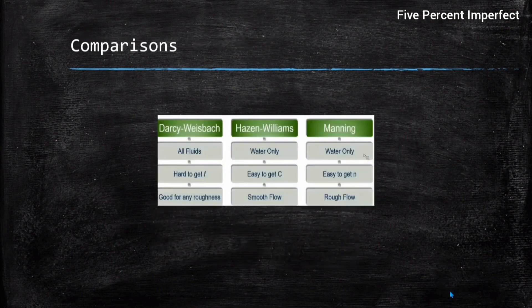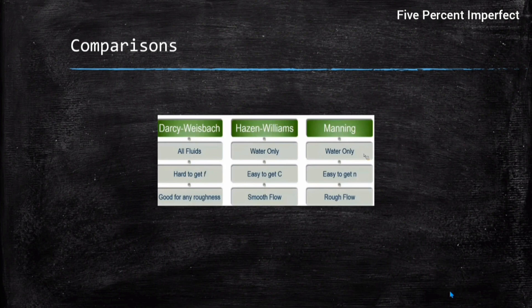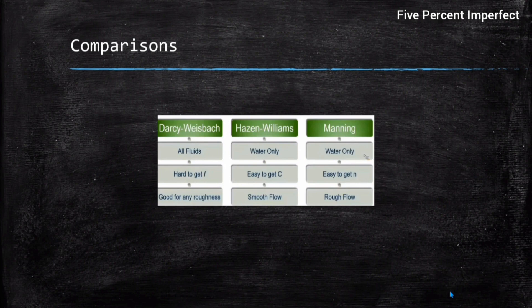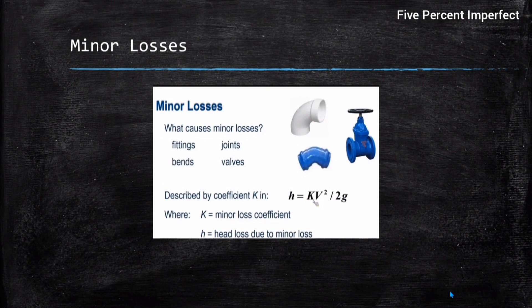A comparative analysis of the three methods: Darcy-Weisbach can be applied to all fluids, whereas Hazen-Williams and Manning's apply to water only. The f factor for Darcy-Weisbach is difficult to obtain, while C for Hazen-Williams and n for Manning's are relatively easier. Darcy-Weisbach is good for a variety of roughness ranges; Hazen-Williams is good only for smoother surfaces; Manning's is used when the flow is rough. This comparison is frequently asked in interviews.